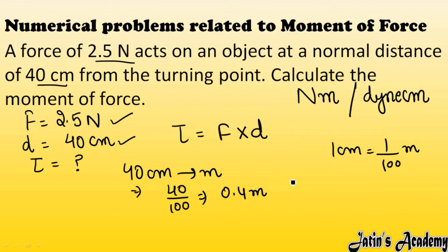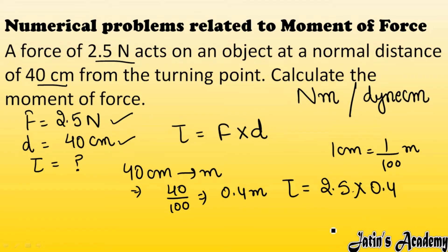Torque equals force multiplied by distance, so torque equals 2.5 newton multiplied by 0.4 meter. Solving this, 2.5 multiplied by 0.4 gives torque equals 1 newton meter. So the torque or moment of force is 1 newton meter.